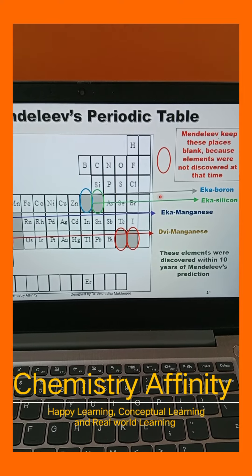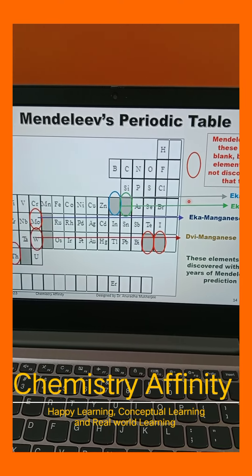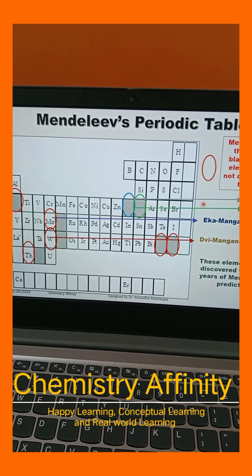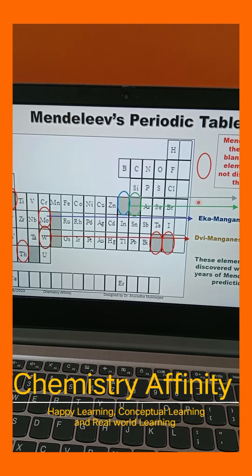These new elements were discovered within 10 years of his prediction. So now you can understand why Mendeleev's Periodic Table was accepted by the entire science fraternity.